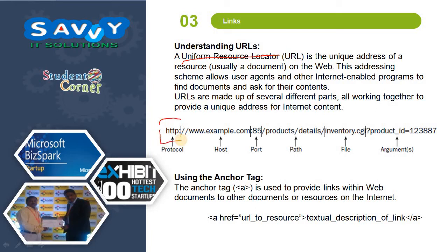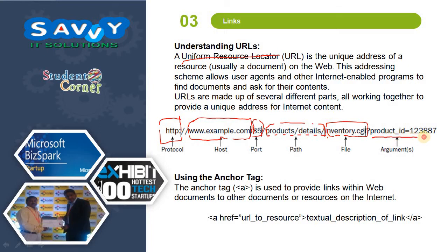The first part of a URL is the protocol — the different protocols are HTTP, HTTPS and FTP. Next is the hosting address, followed by the port number, and then the path where the files are stored. We are accessing this file and passing the arguments.